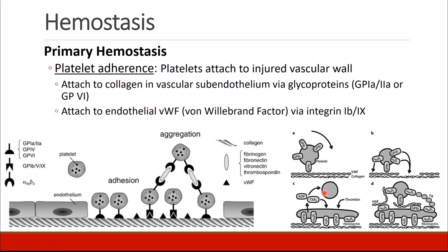The first step of primary hemostasis is platelet adherence. The platelets attach to the injured vascular wall. They attach to collagen in the vascular subendothelium via glycoproteins, or they attach to endothelial von Willebrand's factor by means of substances called integrins.